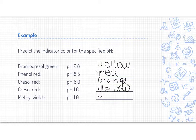Last one. Methyl violet with a pH of 1. So methyl violet changes color between 0 and 1.6, and it changes from yellow to blue. So because 1 is between those two values, it'll be between those two colors. Between yellow and blue is green.